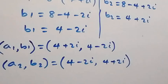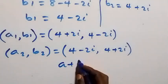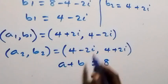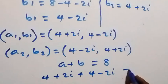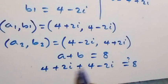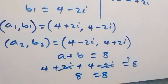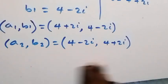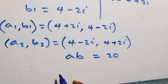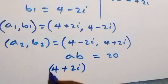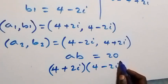We can now check to confirm the solutions satisfy the given problem. From equation one, a plus b equals to 8. Substituting the first set: (4 plus 2i) plus (4 minus 2i) equals 8. The 2i terms cancel, and 4 plus 4 equals 8, which confirms equation one is satisfied. Now for equation two, a times b equals to 20. Let's multiply a as (4 plus 2i) times b as (4 minus 2i).